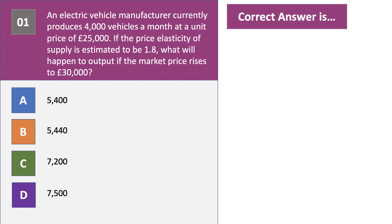Question one: an electric vehicle manufacturer currently produces 4,000 vehicles a month at a price of £25,000 per unit. If the price elasticity of supply is estimated to be 1.8, what will happen to output if the market price increases to £30,000? Press the pause button, have a go at the question, and when you're ready press play.